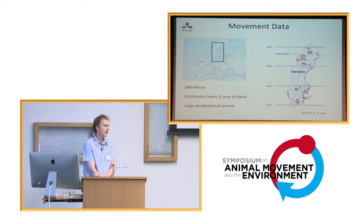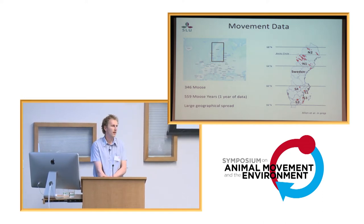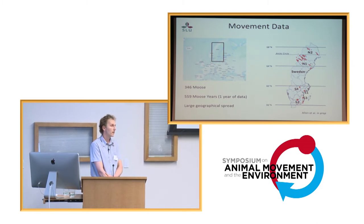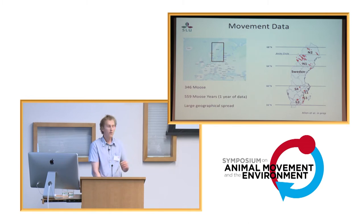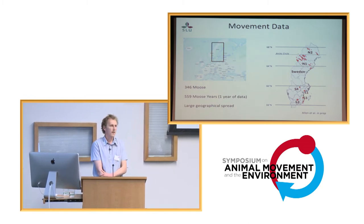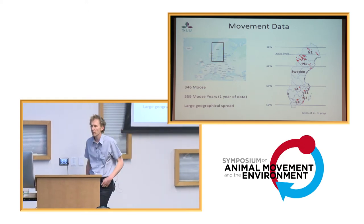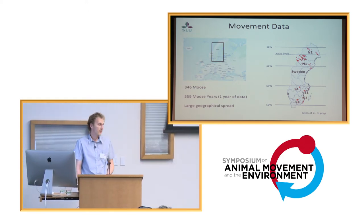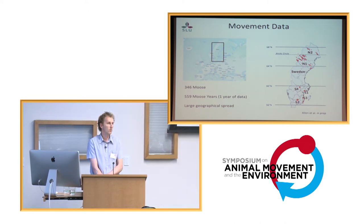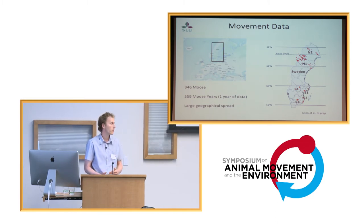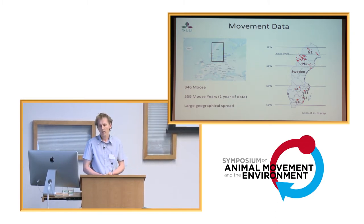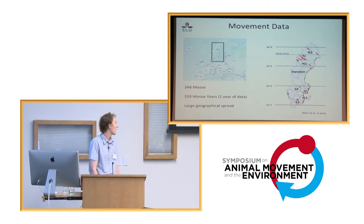In terms of movement data, our study site is essentially Sweden, in northern Europe. We've got six study areas — two in the north, four in the south. The red dots here represent each individual. We have 350 moose and 560 moose years. A moose year is effectively one continuous year of data — for example, if you track an individual for three years, that's three moose years. And we have a large latitudinal spread of nearly 1,500 kilometers.